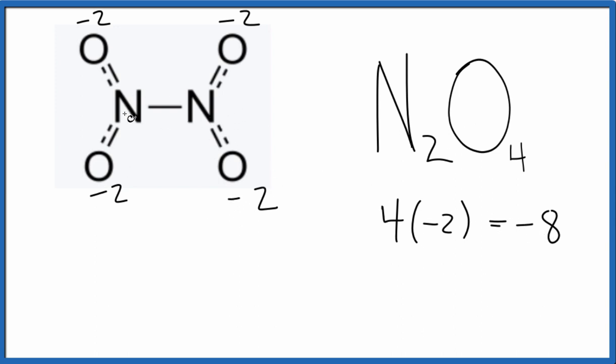That means the nitrogens in the center are going to need to balance that out so that the total charge is zero. This is a neutral molecule. So I need to have a total of plus eight, which means each nitrogen is going to be plus four.